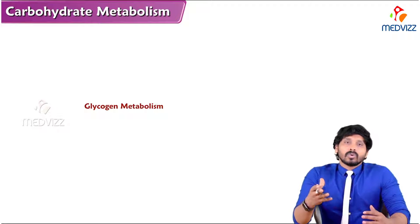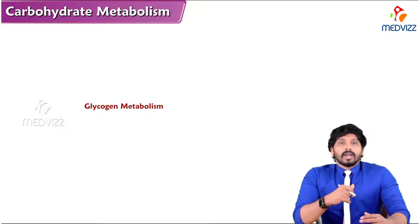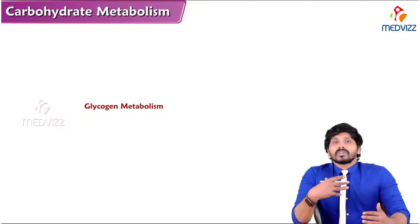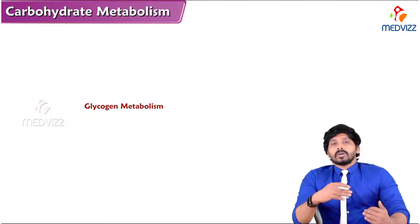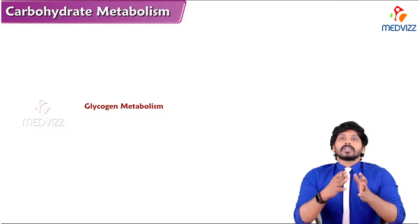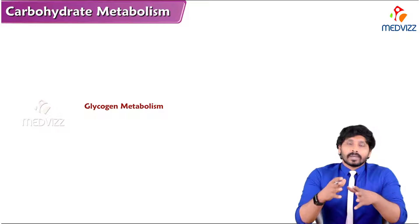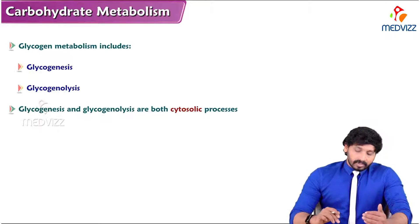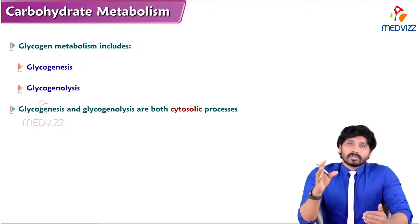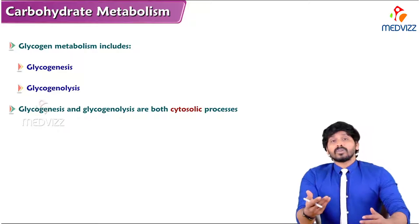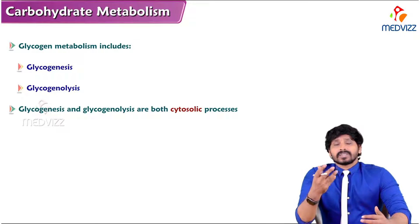Glycogen is a type of complex carbohydrate belonging to the homopolysaccharide class. Homopolysaccharide means its composition is purely of repeated units of glucose molecules. The difference between glycogen and starch is that starch is a plant-based complex carbohydrate, while glycogen is an animal-based complex carbohydrate.